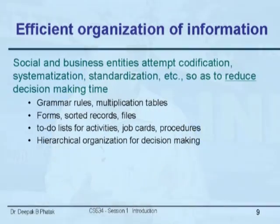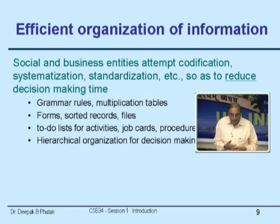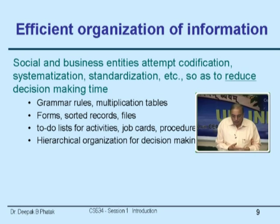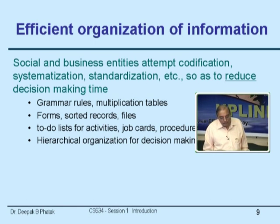Now let's understand the need for efficient organization of information. One of the things that human society does is attempt codification, systematization, and standardization to reduce decision-making time. You are familiar with grammar rules — Panini reduced grammar to very few simple rules so people could apply them and use correct grammar. Multiplication tables are another example: a milkman in earlier days would multiply 58.5 liters by the price per liter mentally, without paper, because he had memorized multiplication tables.